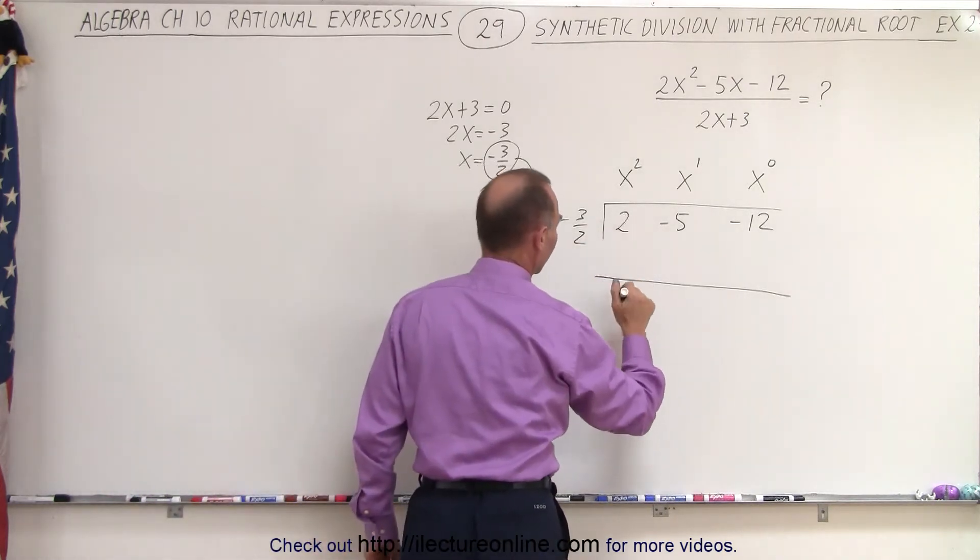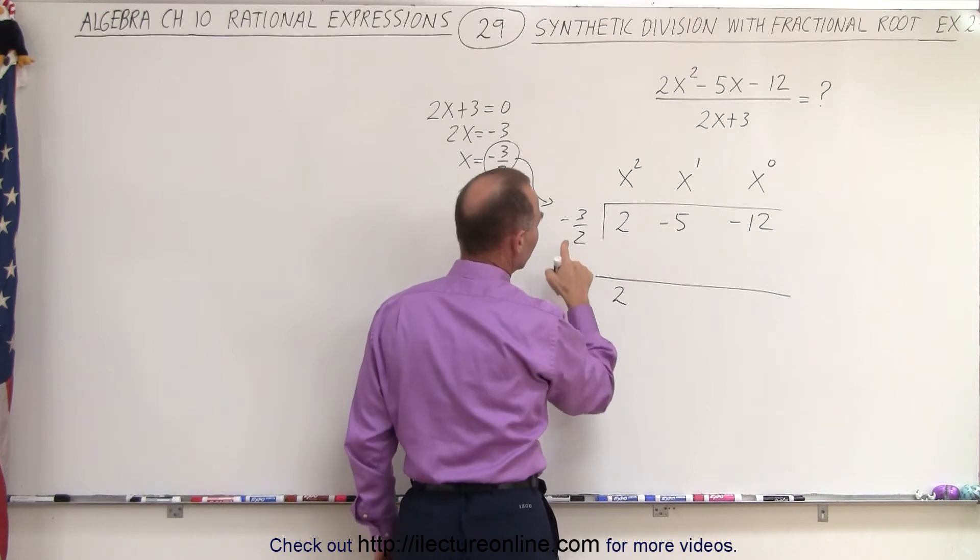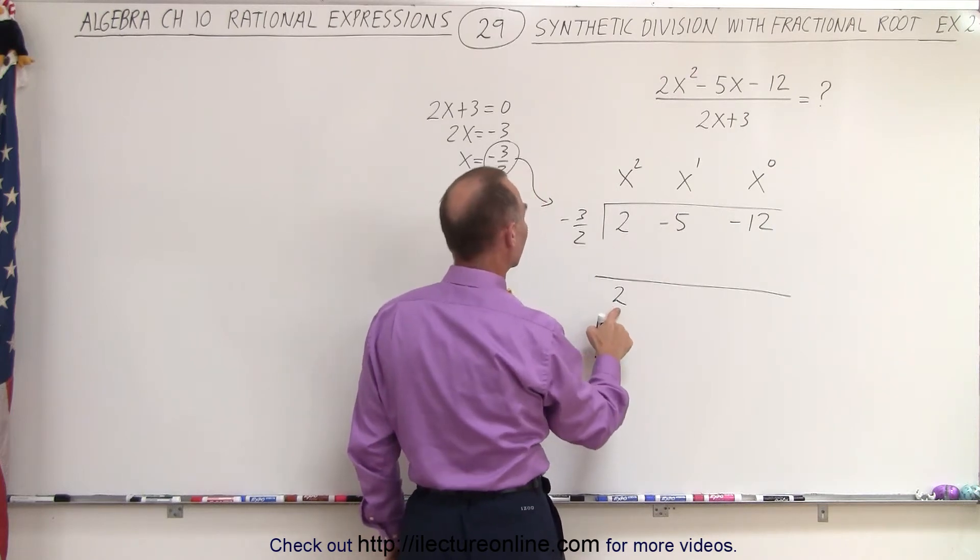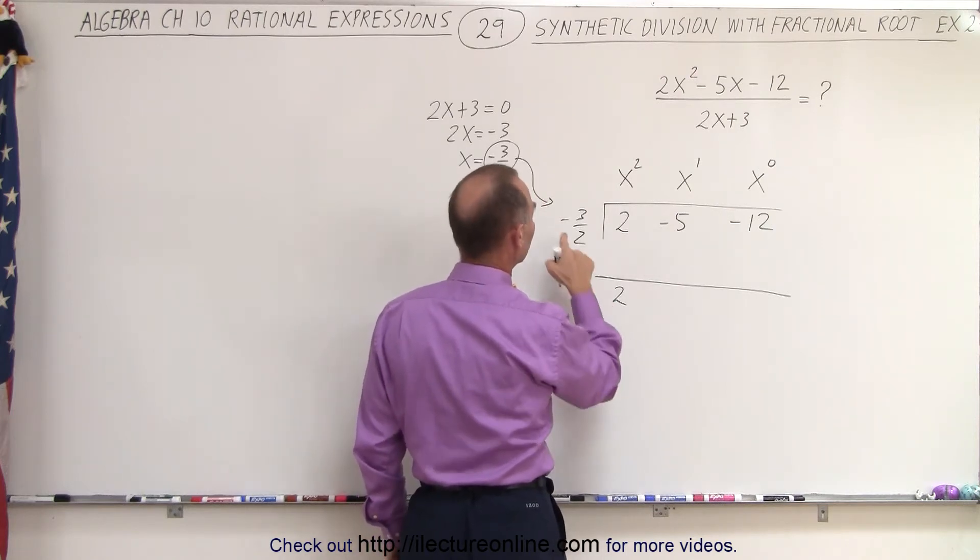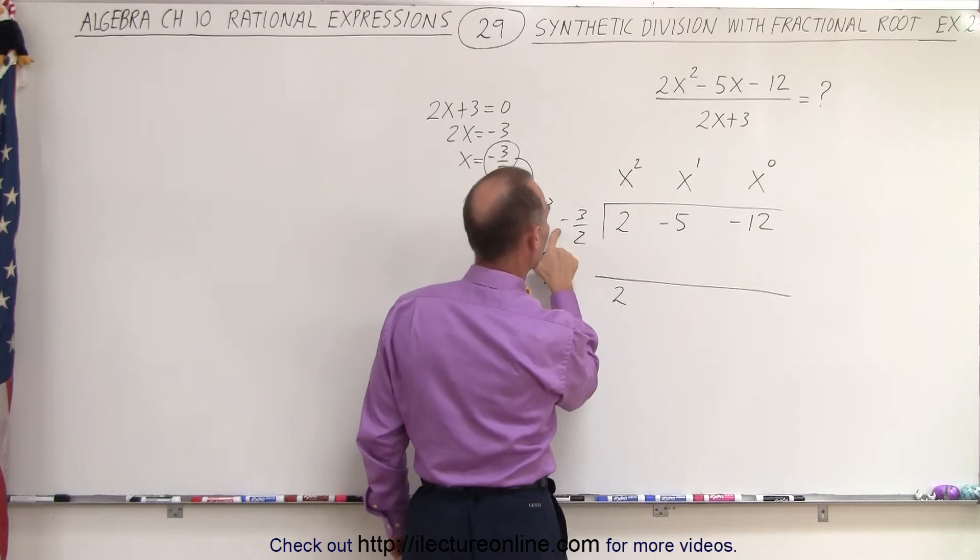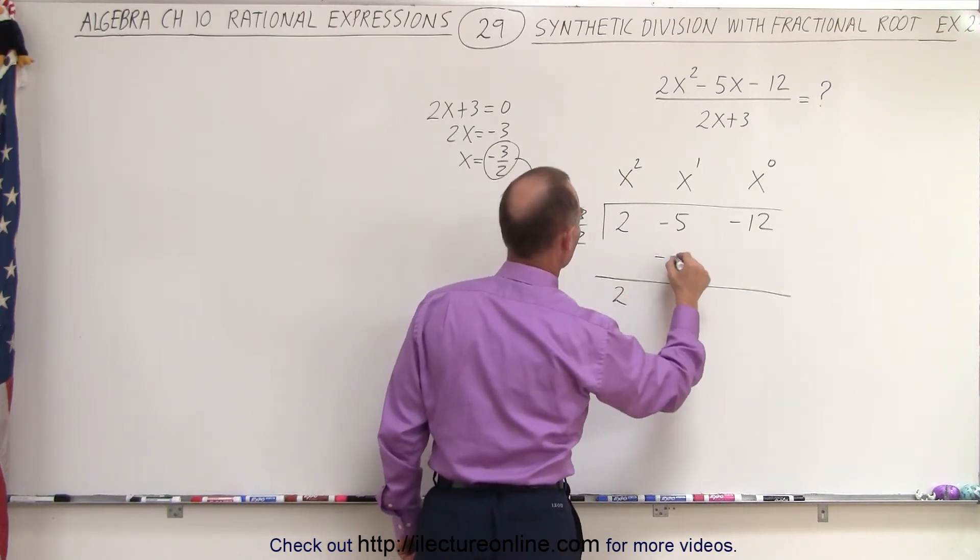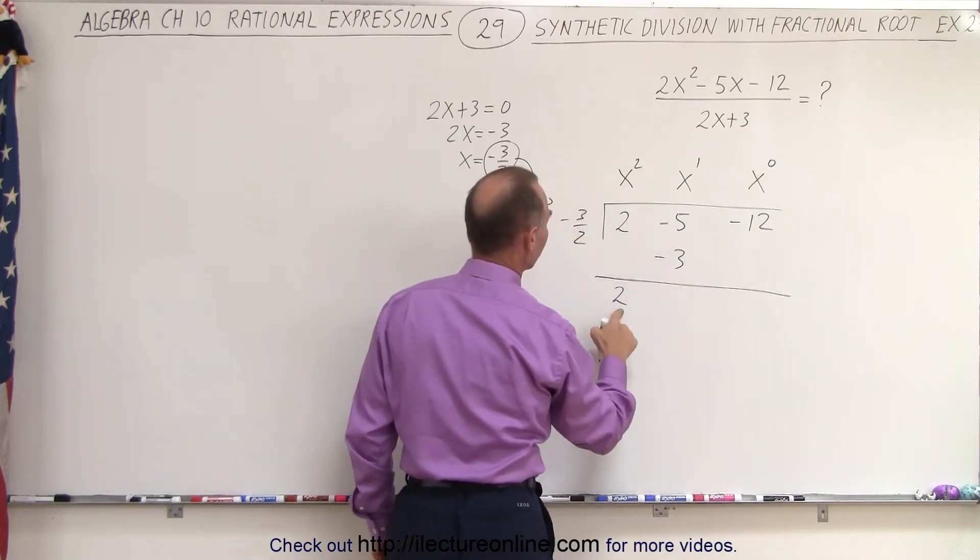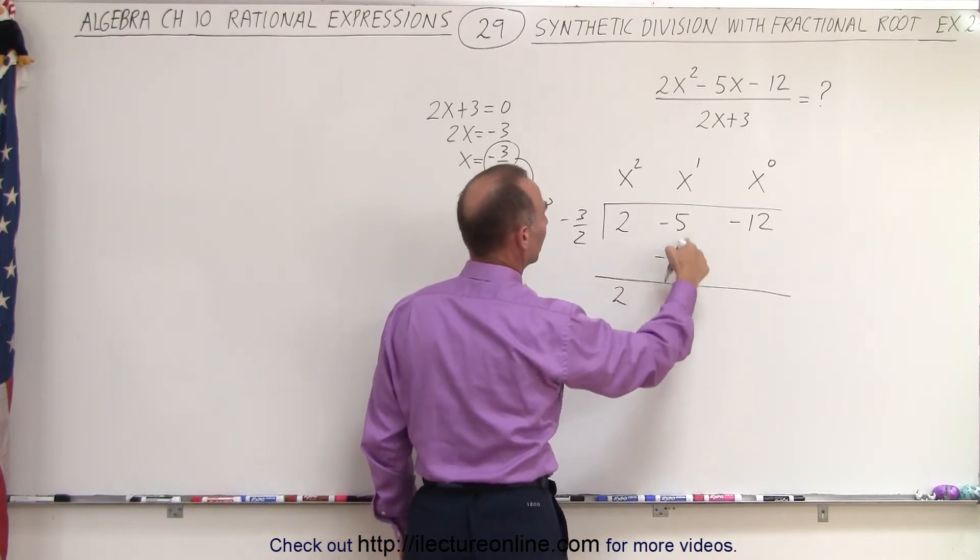We drop down the first number. Then we multiply the minus 3 over 2 times 2, which gives us, let's see, 2 divided by 2 is 0. That gives us minus 3. So minus 3 over 2 times 2, the 2's cancel out, we get minus 3.